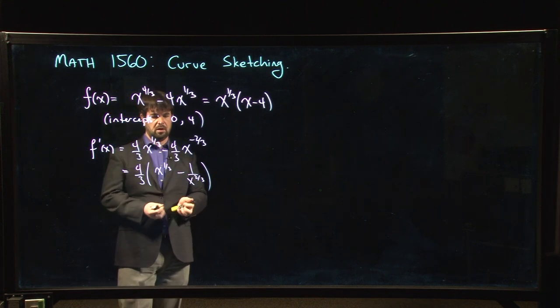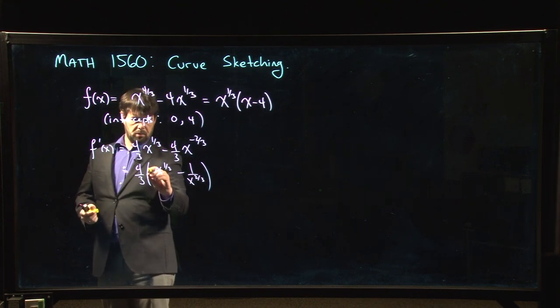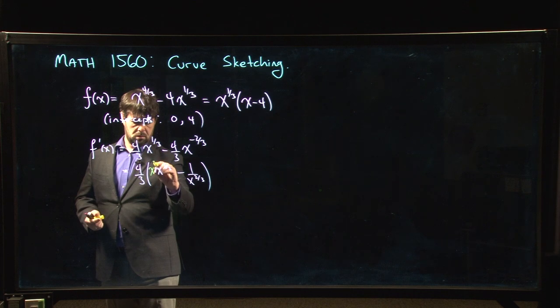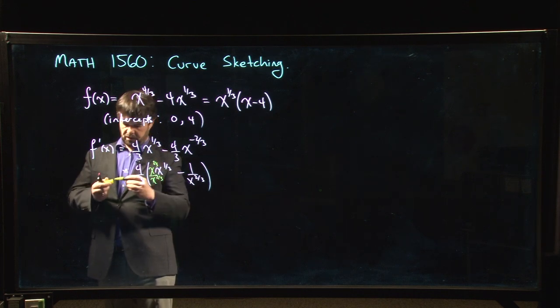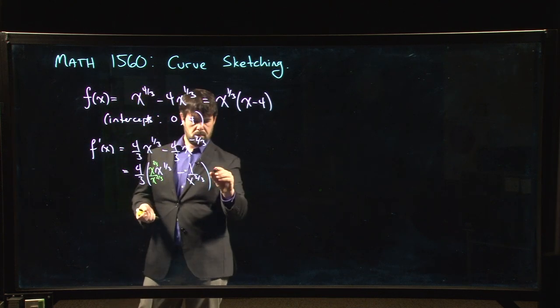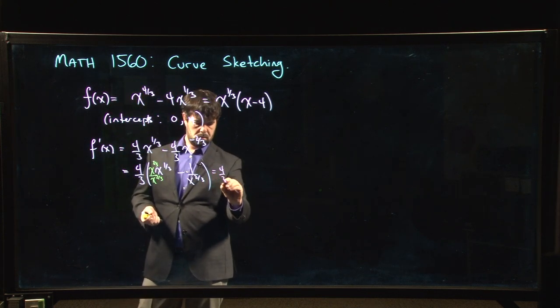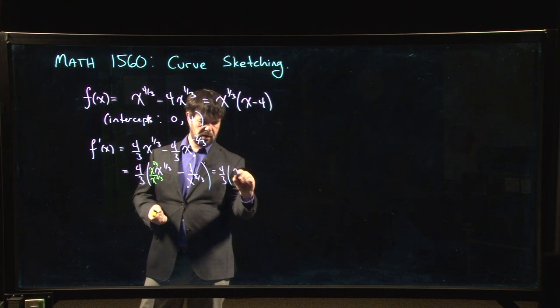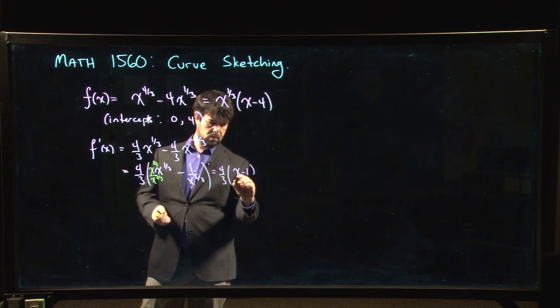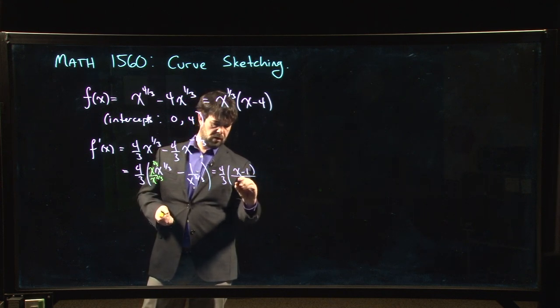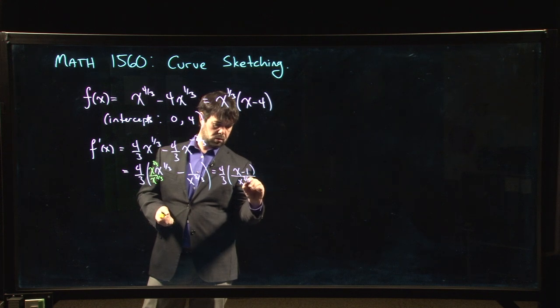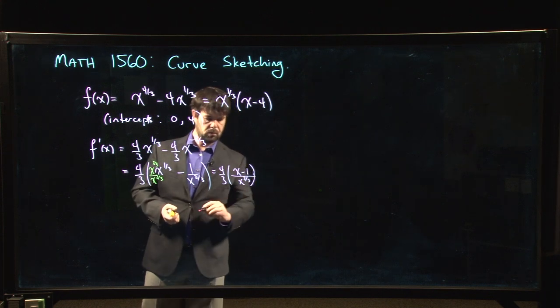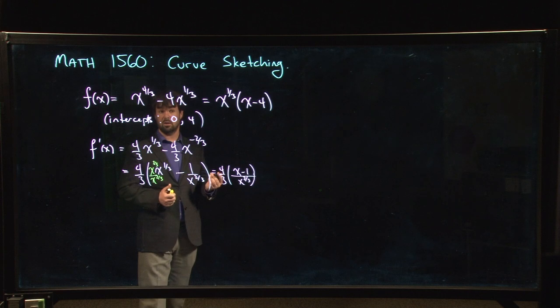So what we need to do here is we need to get a common denominator. So we're going to multiply this one top and bottom by x to the 2 over 3 and then I'm left with x minus 1 over x to the 2 over 3. Okay, there's my first derivative.